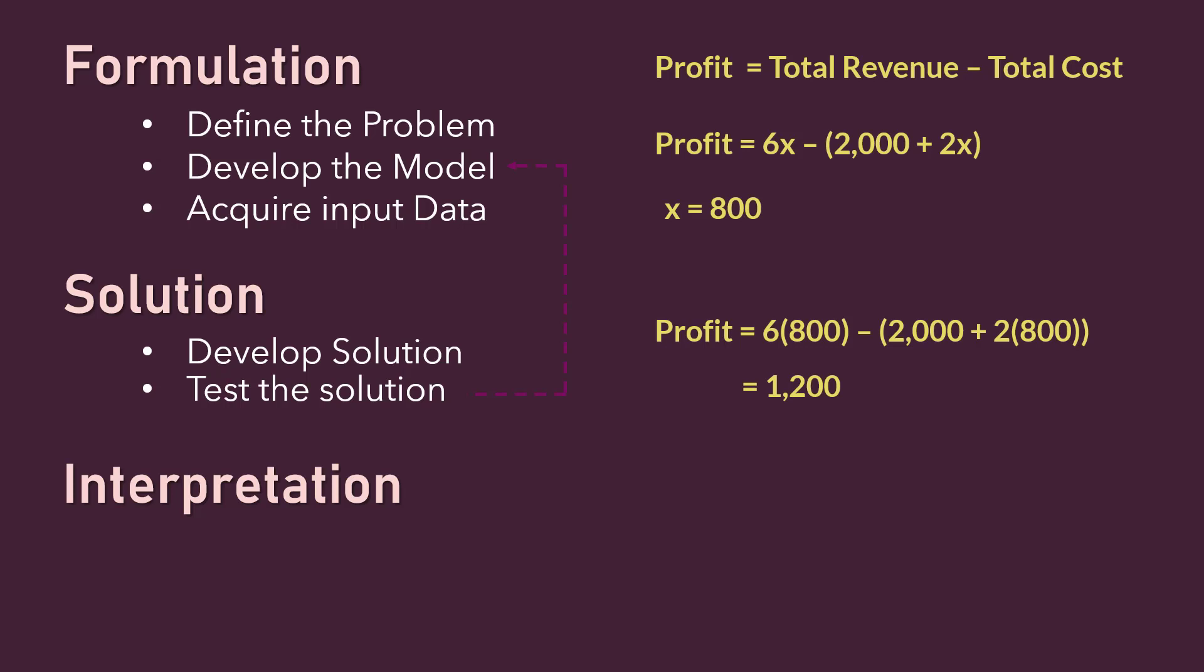This is where we analyze the results and do what is called sensitivity or what-if analysis. Sensitivity simply refers to how the model responds to changes. That is, what if we reduce the variable cost per unit to $0.80, or increase production to 1,000 units, or if fixed cost increased to 3,000, what will happen to profit? So sensitivity analysis is useful in analyzing the best and worst case scenarios in order to make a good decision.